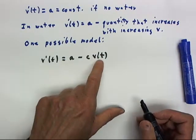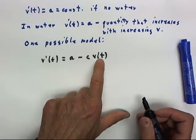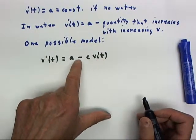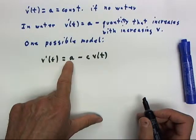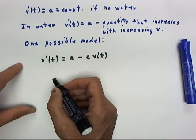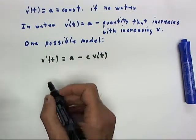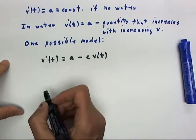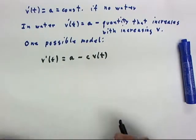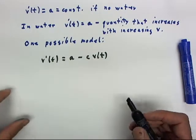So that we see that the faster the ball moves, the greater this term that we're subtracting from a. Now, it turns out that this is an equation that's not particularly difficult to solve, although we're not going to talk yet about how to solve it.